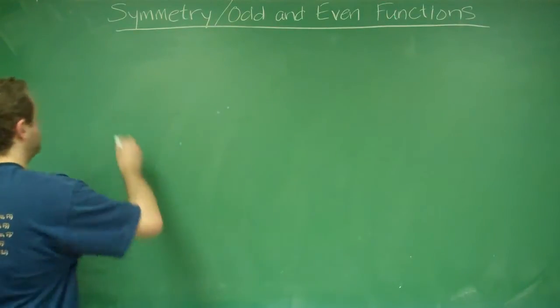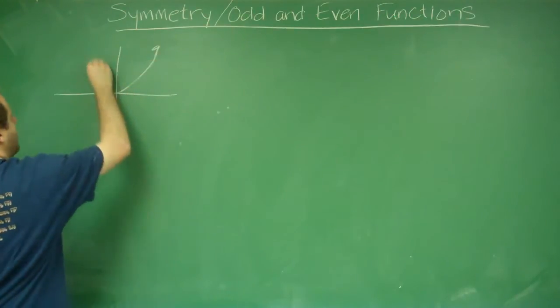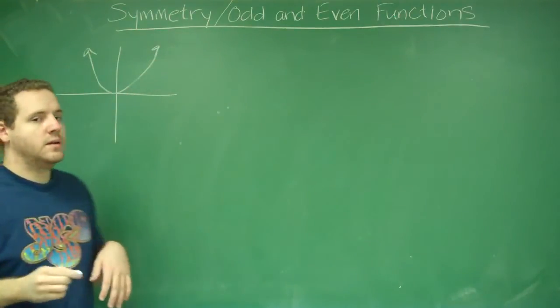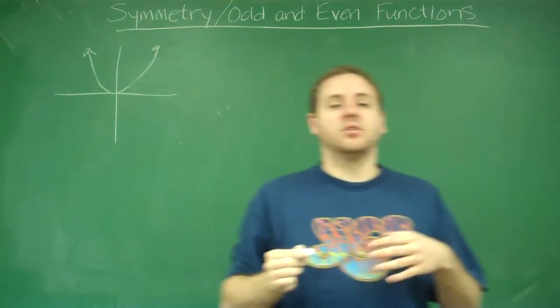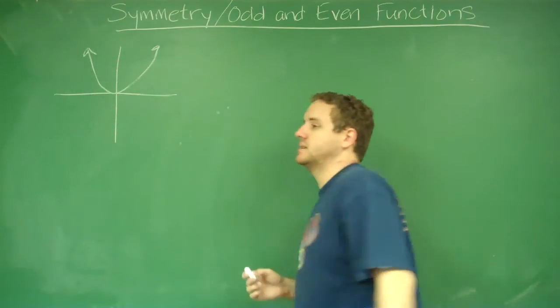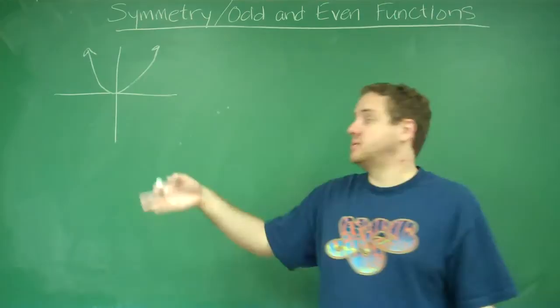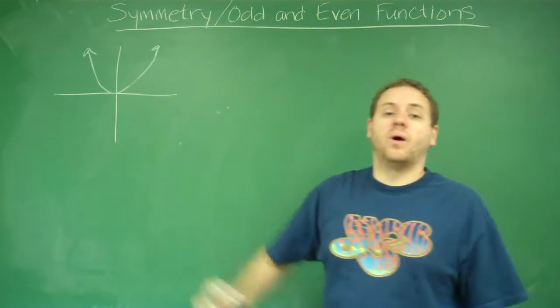So let's look at some basic graph shapes. If I had a standard type of parabola, this graph has symmetry across the y-axis. Because if I were to rotate it across the y-axis, flip it over, I would get the exact same function back. So this is symmetric about the y-axis.